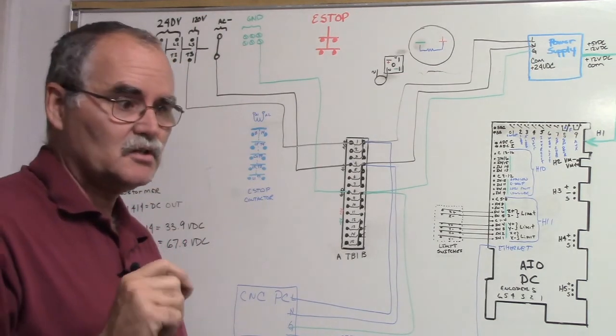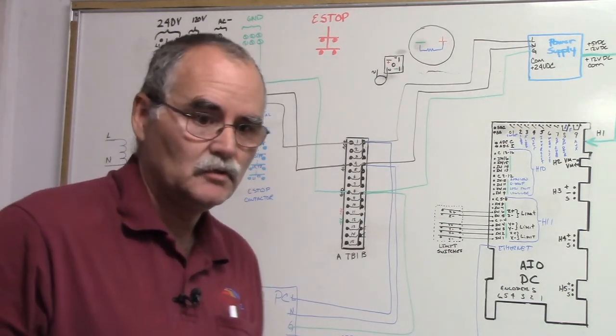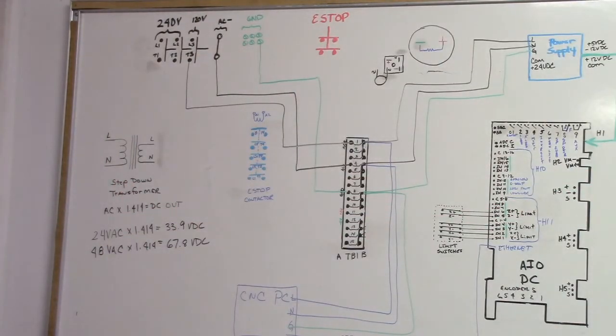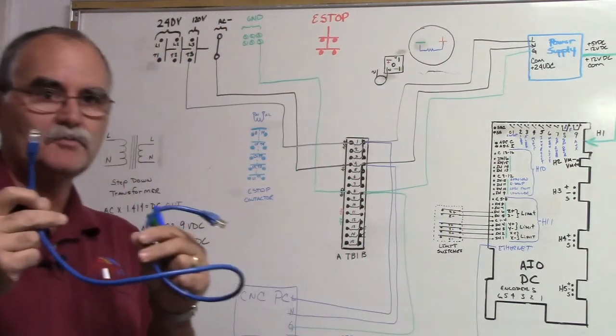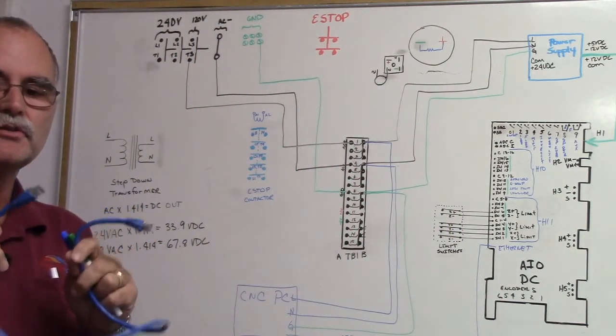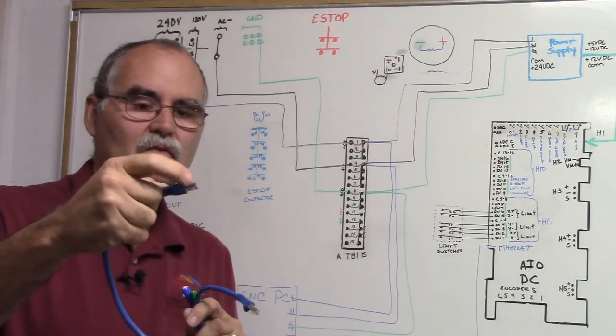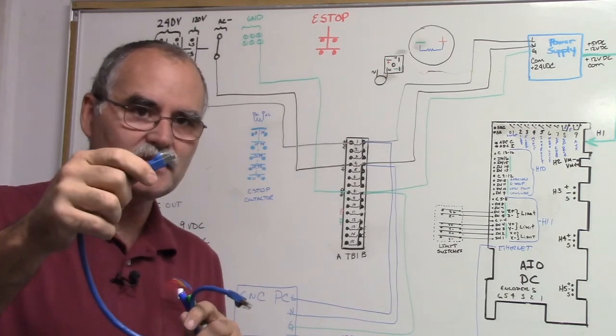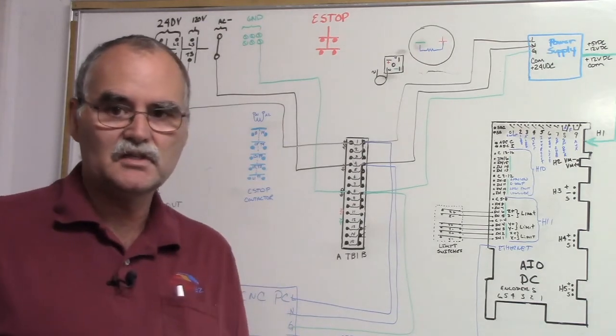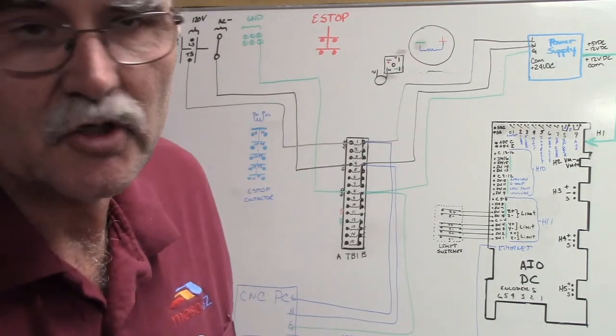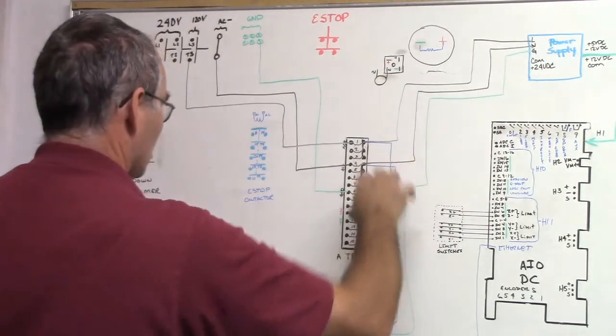You can tell the difference when you look at a cable. This is an ethernet cable, patch cable. The difference between this and an unshielded one is that there's a metal jacket around the connector, so that denotes that it's a shielded cable. It's the only kind of cable that you use from the CNC PC to the all-in-1 DC. So make sure you use the right ethernet cable.